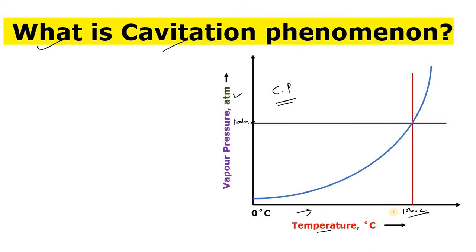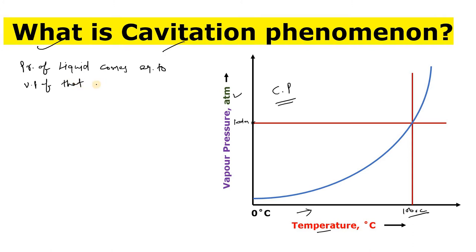Now if I ask you what boiling is — boiling occurs when the pressure of the liquid comes equal to the vapor pressure of that liquid at that temperature. So at one atmospheric pressure, at 100 degrees Celsius, your water will boil.